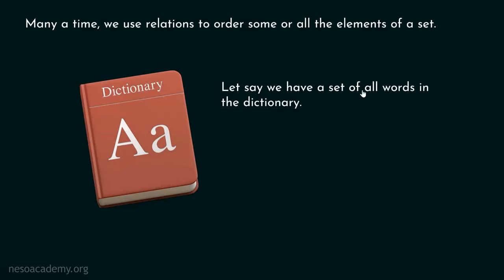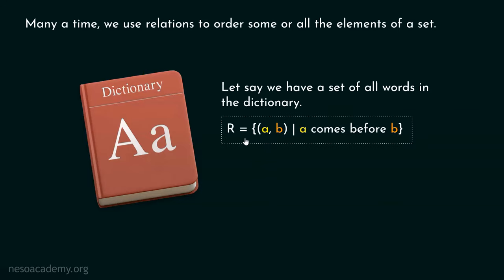Let's say we have a set of all words in the dictionary, and we have relation R which consists of all ordered pairs of this form such that A comes before B. We are considering two arbitrary words from this dictionary, and we are putting this condition that A must come before B. If you closely observe this relation, you can find that it is helping us in forming the order — ordering all words in the dictionary.